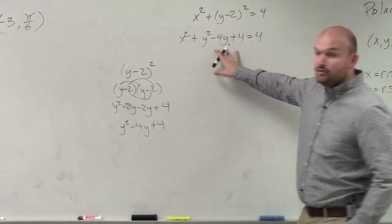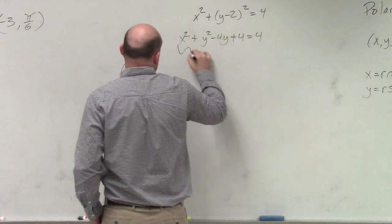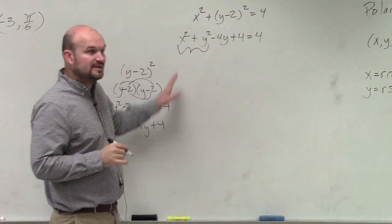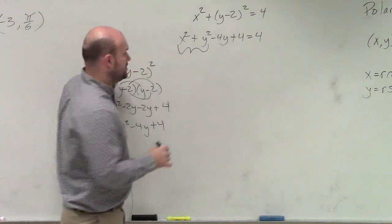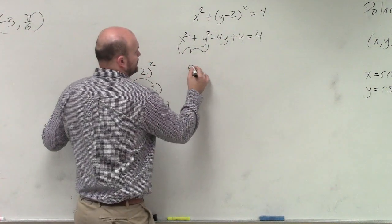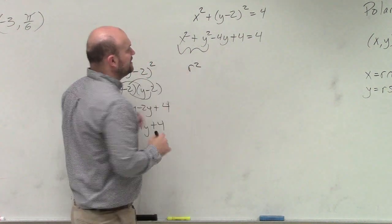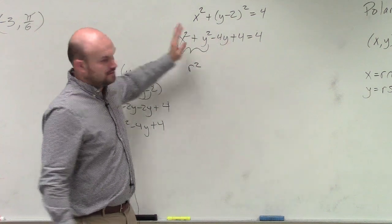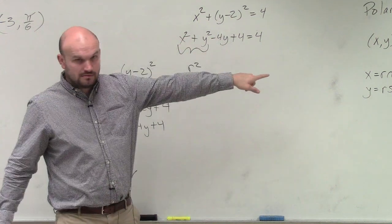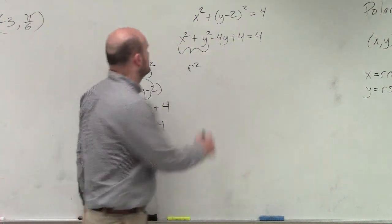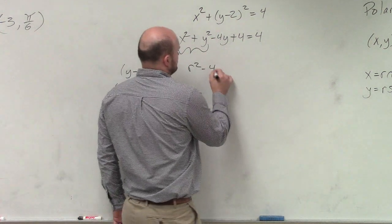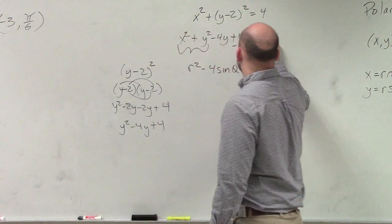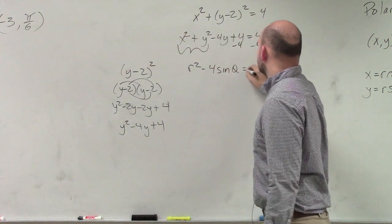Now over here we have a grouping, don't we? We can replace x squared plus y squared with r squared. What can we replace the y with? And then I could subtract the 4 on both sides to equal 0.